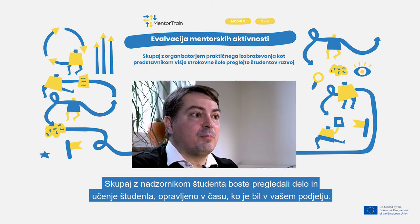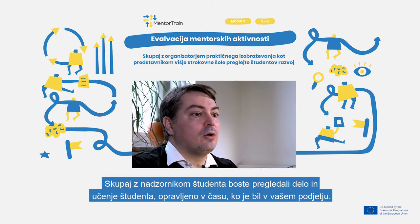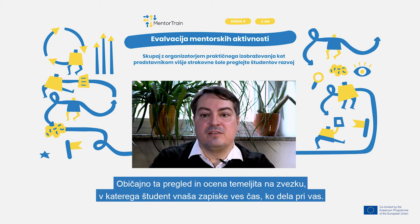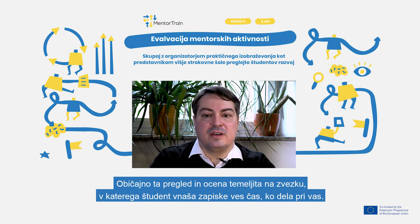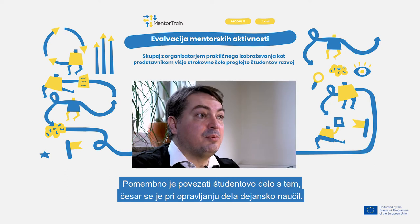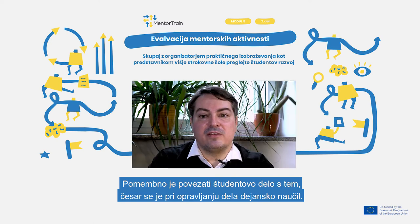Together with the apprentice's school supervisor, you review the work and learning the apprentice has done while they were at your company. Normally, this review and evaluation is based on a notebook that is being filled in by the apprentice throughout their work with you. It is important to make the link between the work the apprentice has done and what they have actually learned from it.